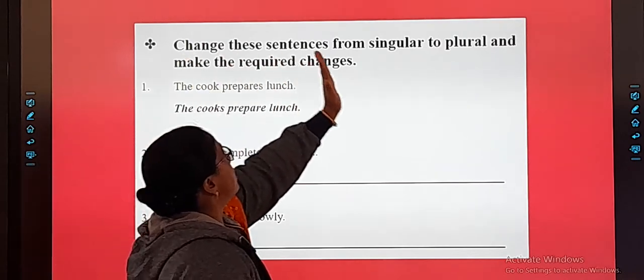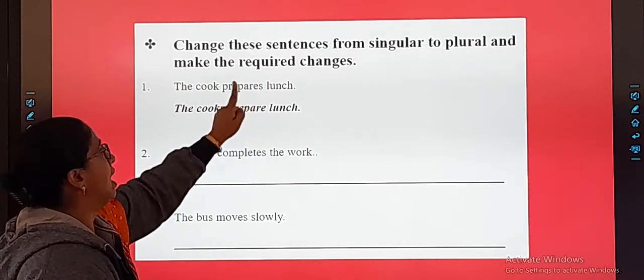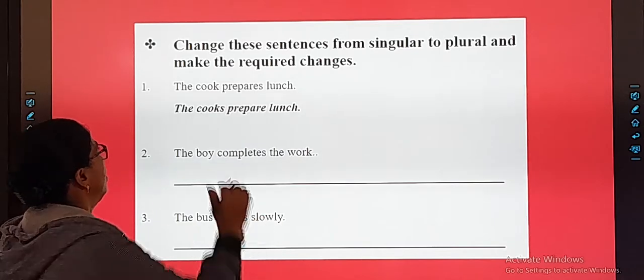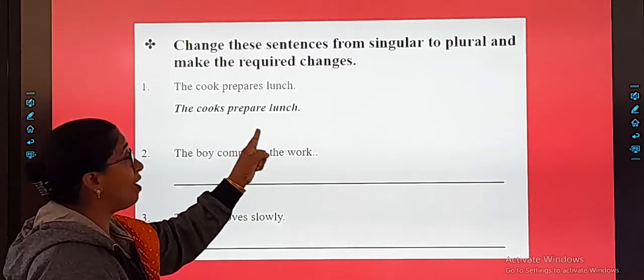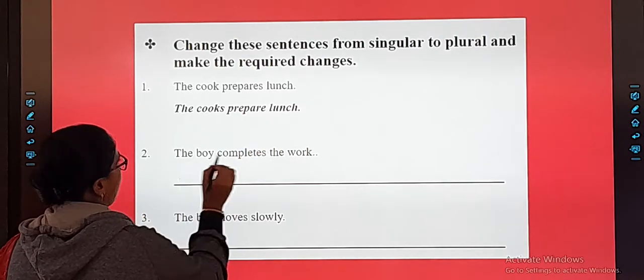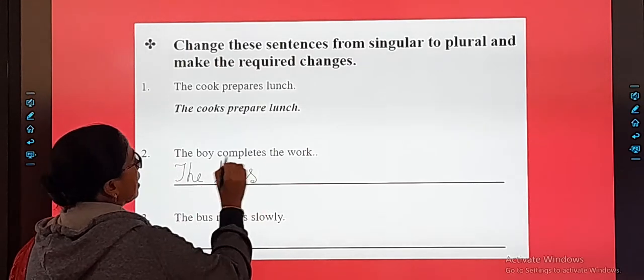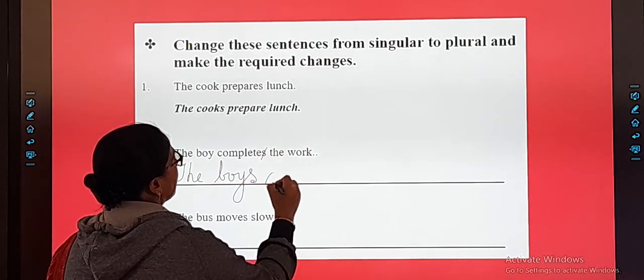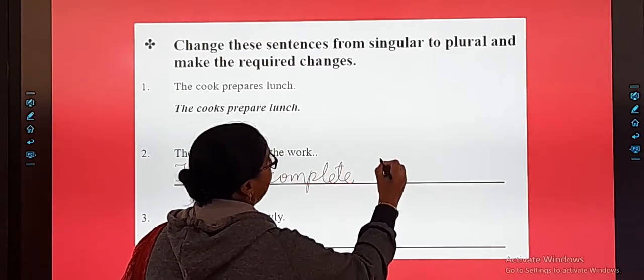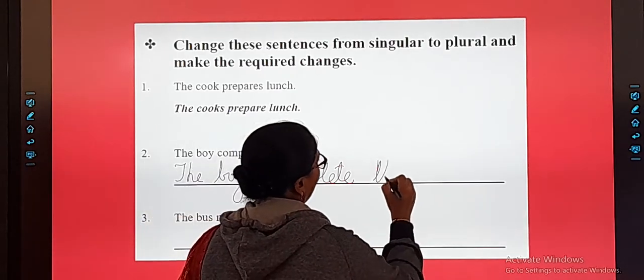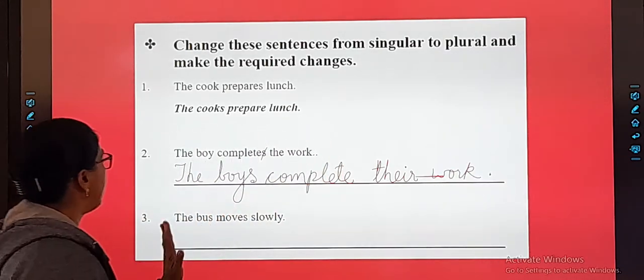Next one. Change the sentence from single to plural. Now this is single: a cook, and singular verb has S. You have to make it plural, just opposite. A cook cooks. Plural is cooks. Now it's plural. And plural verb - there is no S. Okay? So the boy - what will you write? The boys, B-O-Y-S. Complete - you will not put S, you will write complete, C-O-M-P-L-E-T-E. The boys complete their work. The boys complete their work.